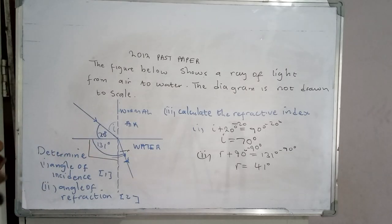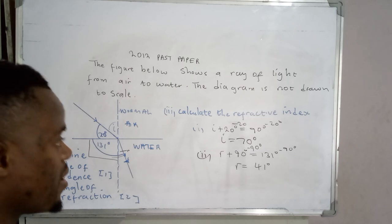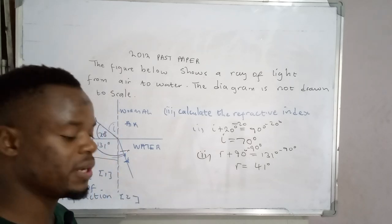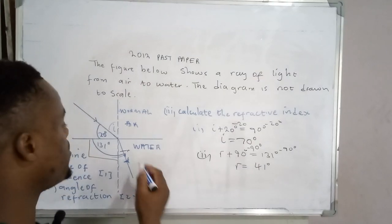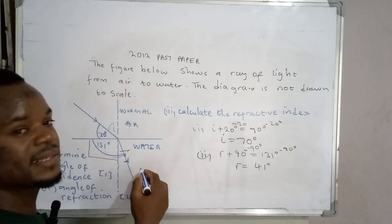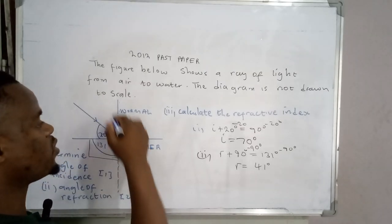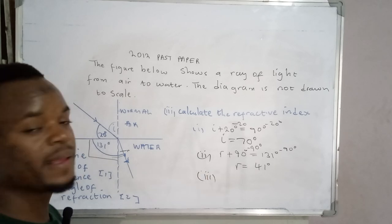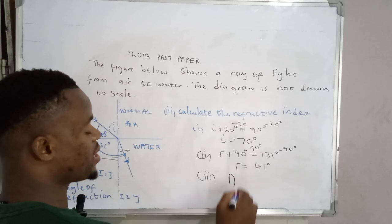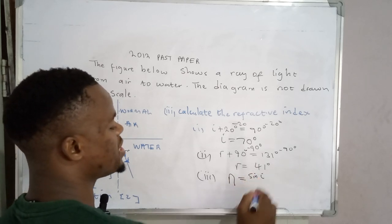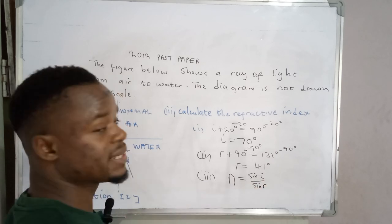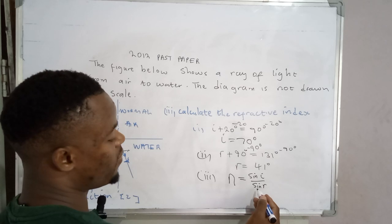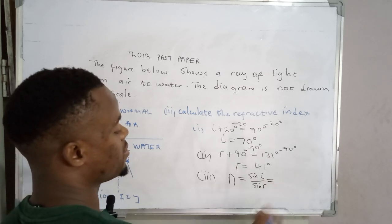Let's move on to the third question: calculate the refractive index. So what's the refractive index? The refractive index is simply the measure of the degree to which the second medium refracts a light ray relative to the first medium. The refractive index is given by Snell's law. So the refractive index is given by the sine of the angle of incidence over the sine of the angle of refraction.